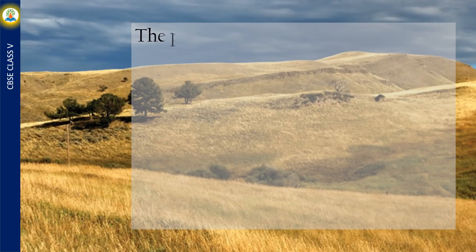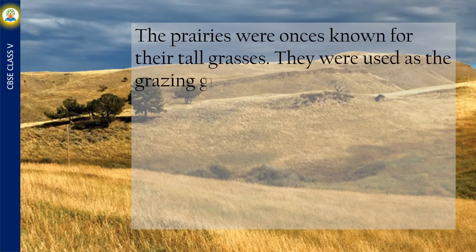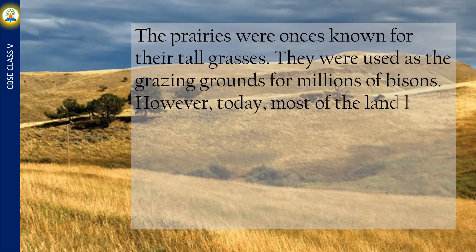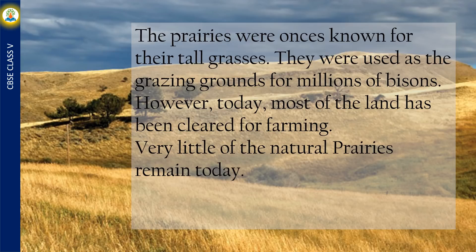The prairies were once known for their tall grasses and were used as grazing grounds for millions of bisons. However, today most of the land has been cleared for farming. Very little of the natural prairies remain today. The grasses are green in summer and turn brown in autumn.